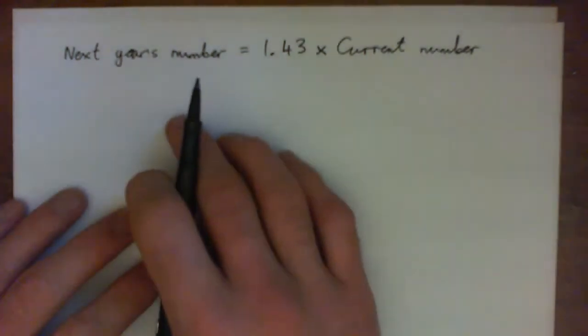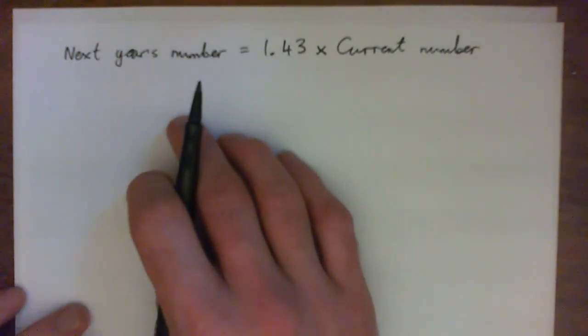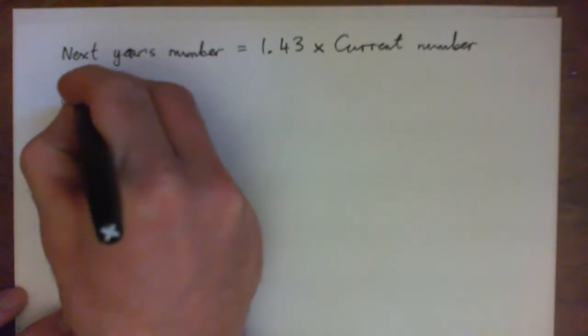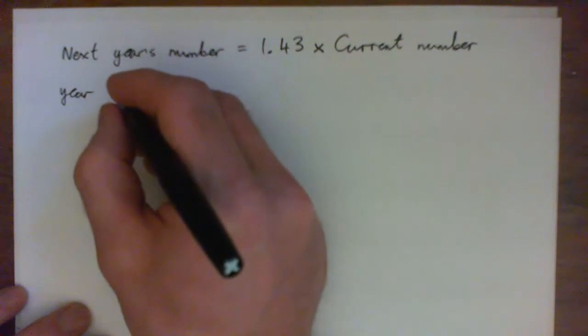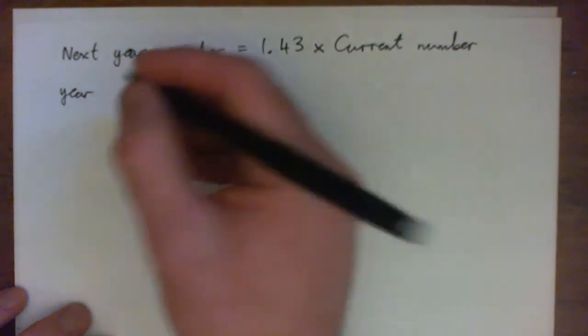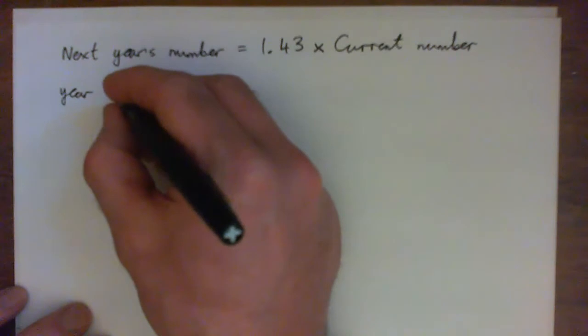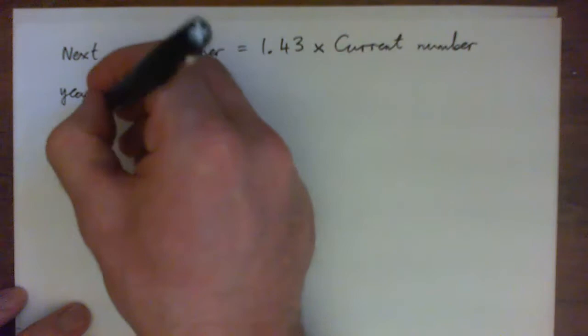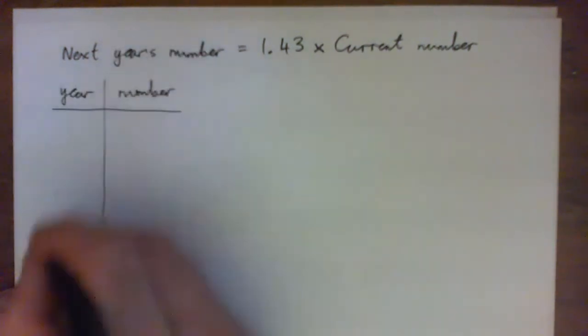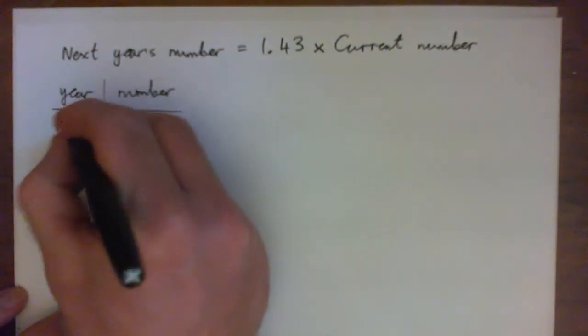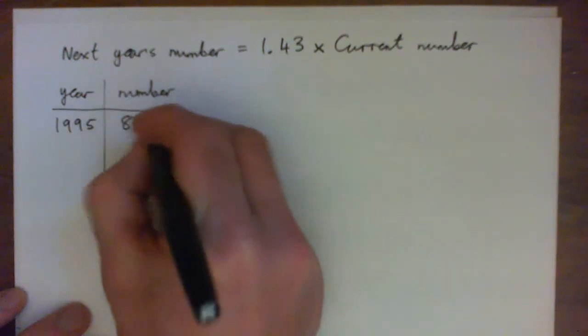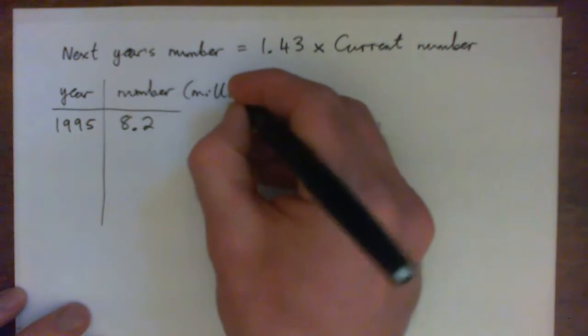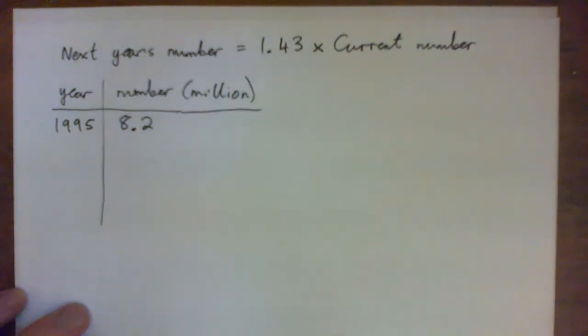Okay, so let's start out with doing this. We'll do year and we'll do number of internet domain hosts, right? Or to make it simpler in our minds, we could just think number of websites, okay? But the year 1995, they tell us there were 8.2 million, and we'll remember that means that's 8.2 million, okay? Internet domain hosts.